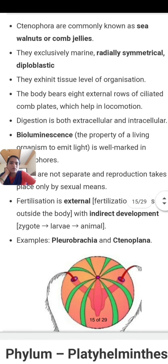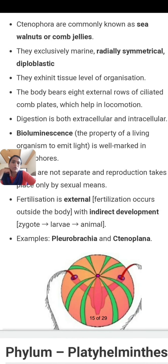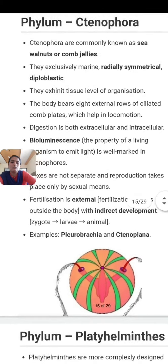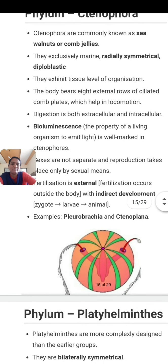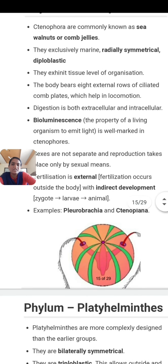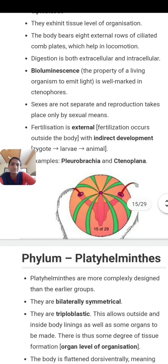The body bears eight external rows of ciliated comb plates, which help in locomotion. Look at the diagram — they show eight external rows of ciliated comb plates for locomotion. Digestion is both extracellular and intracellular.